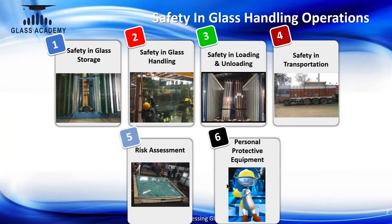Glass handling safety has different domains. First is the storage part — after production, glass needs to be stored. Then it must be handled while moving between storage locations. Next comes safety in loading and unloading for dispatches. Then safety in transportation — what precautions are needed while transporting glass. Two complementary topics are risk assessment, specific to glass handling, and personal protective equipment.